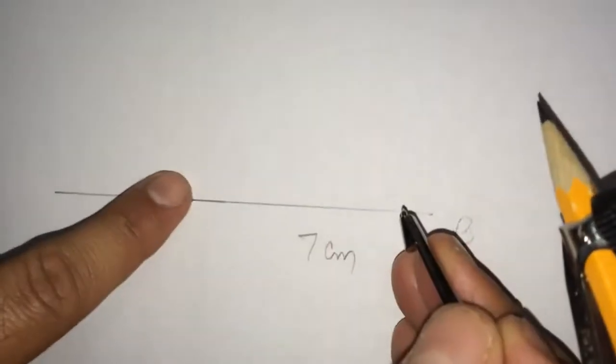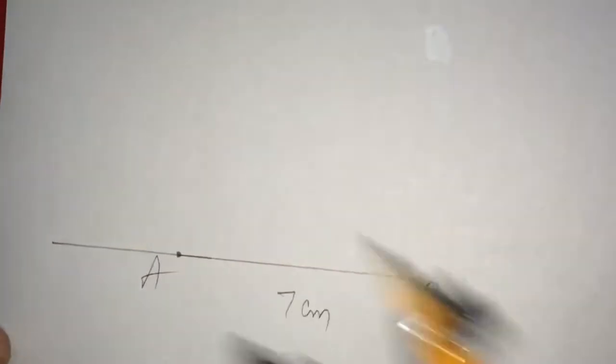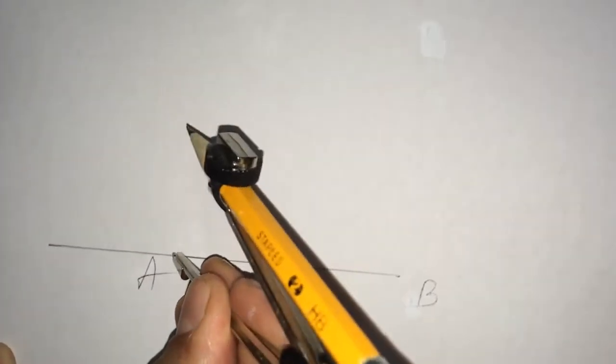Next, take A as center. I mean, I want to construct here a perpendicular line at A to this line. We learned previously. So, I am taking A as center. I am drawing an arc like this.